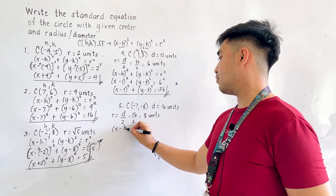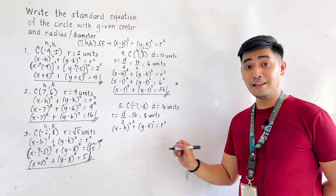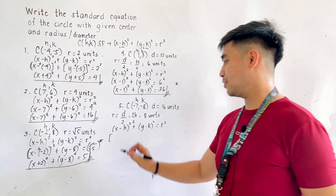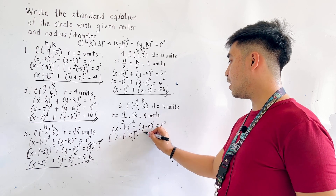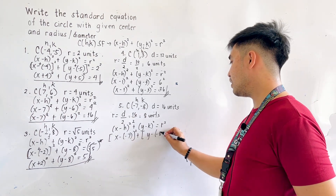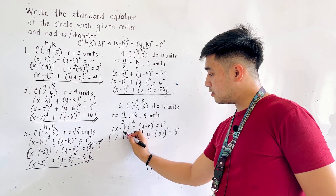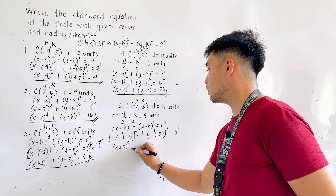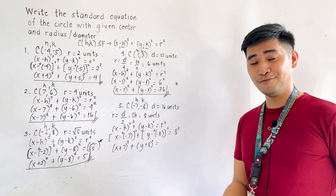Writing the equation: x minus h, quantity squared, plus y minus k, quantity squared, is equal to r squared. Substituting, this becomes x minus negative 7, quantity squared, plus y minus negative 8, quantity squared, is equal to 8 squared. Simplifying: minus minus becomes plus for both terms, giving x plus 7, quantity squared, plus y plus 8, quantity squared, is equal to 64.